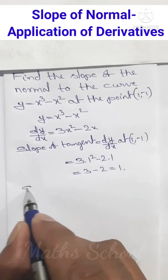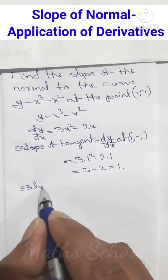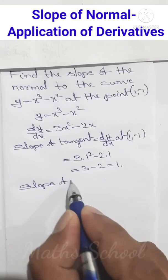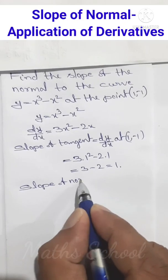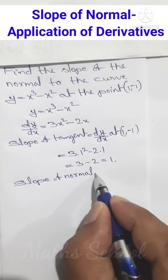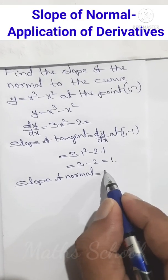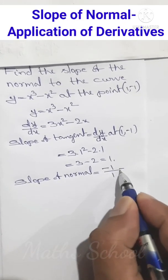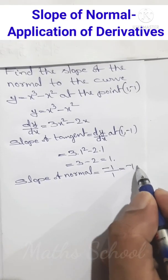The slope of the normal equals -1 divided by the slope of the tangent, that is -1/1 = -1.